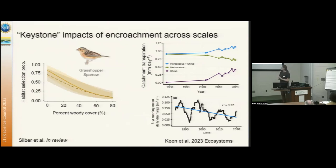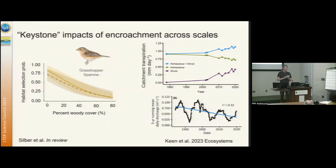The other thing that's been interesting is thinking about eco-hydrology. We've seen a decrease in our streamflow, and the punchline is that woody plant encroachment in the broader watershed rather than the riparian zone seems to be responsible for this large decrease in streamflow. Find me if you want to talk about machine learning and remote sensing, because we're very new to this but really excited about it too. Thank you.